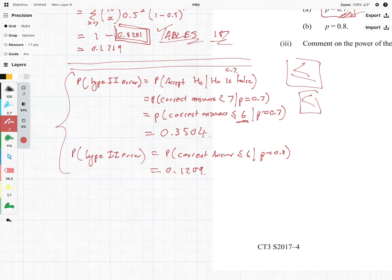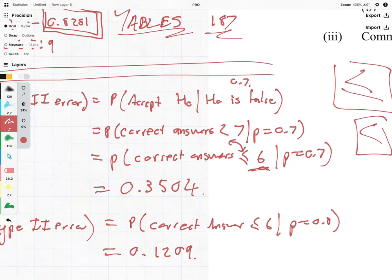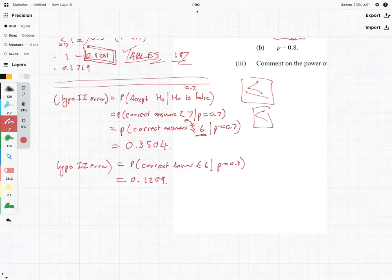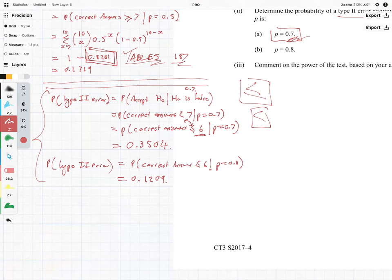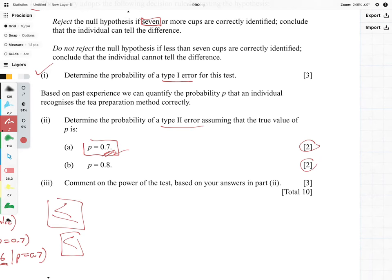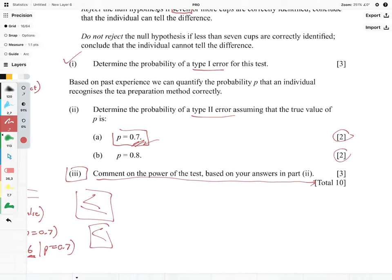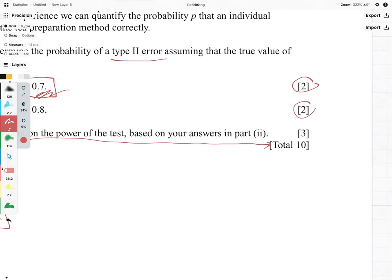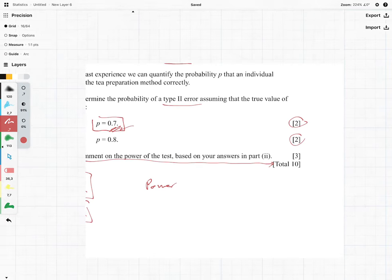This is standard book work, and they're giving you two marks for each, that's very generous. I would have only given one mark for each. Coming to part 3, which is maybe the more harder part, this is testing a more higher level of thinking. It says comment on the power of the test based on your answer in part 2. And what we know is that the power is related to the Type II error, it is equal to 1 minus the probability of our Type II error.